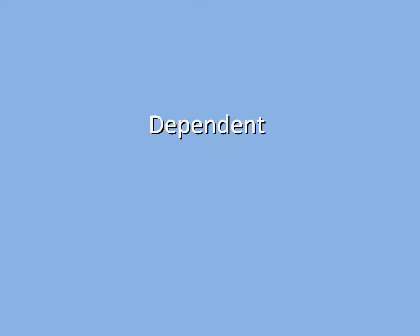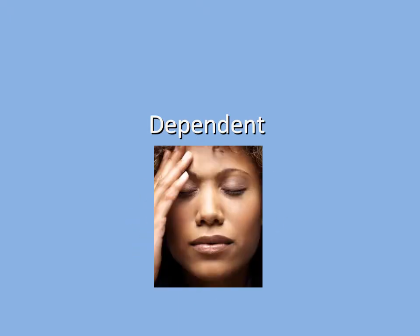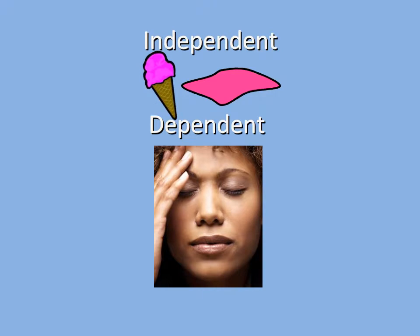There is another variable called the dependent variable. If we change the independent variable, the dependent variable will change as well, but we cannot directly change it. The dependent variable in our experiment is the headache. Per our hypothesis, if we use melted ice cream there should be no headache, but if we use frozen ice cream there should be a headache. So, the headache variable depends upon the ice cream variable.